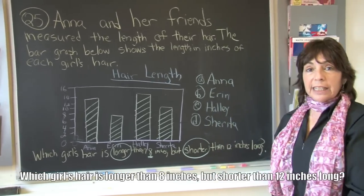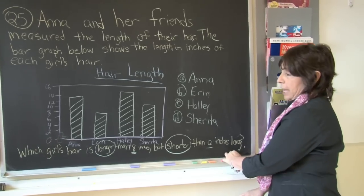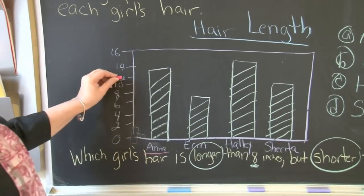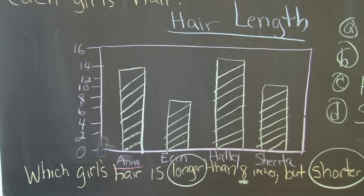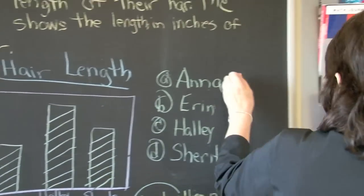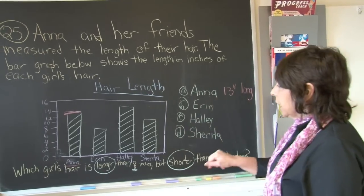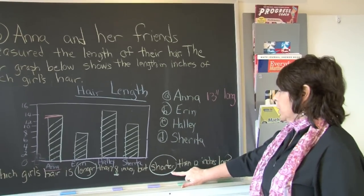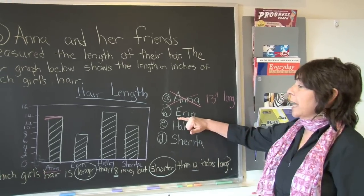Let's look at Anna's hair. Anna's bar is between twelve and fourteen — what number is between twelve and fourteen? That's easy: thirteen. So Anna's hair is thirteen inches long. Is that longer than eight? Yes. But is it shorter than twelve? No. So it cannot be Anna.